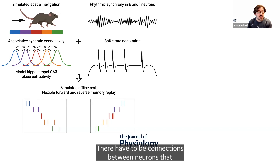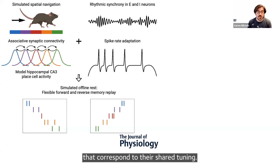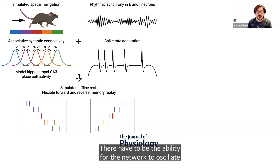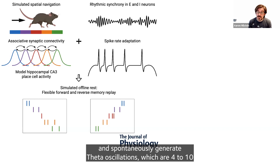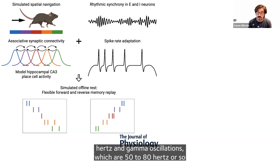There have to be connections between neurons that correspond to their shared tuning. There also has to be the ability for the network to oscillate and spontaneously generate theta oscillations, which are 4 to 10 hertz, and gamma oscillations, which are 50 to 80 hertz or so.